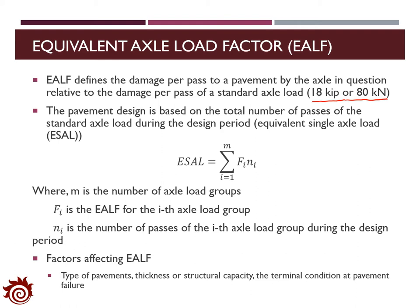Pavement design is based on the total number of passes of the standard axle load during the design period, which is the design life. The ESAL is the summation of FI times NI, where M is the total number of axle load groups, FI is the EALF for the ith axle load group, and NI is the number of passes of the ith axle load group during the design period. Factors affecting EALF values include pavement type, thickness or structural capacity, and terminal conditions at pavement failure.